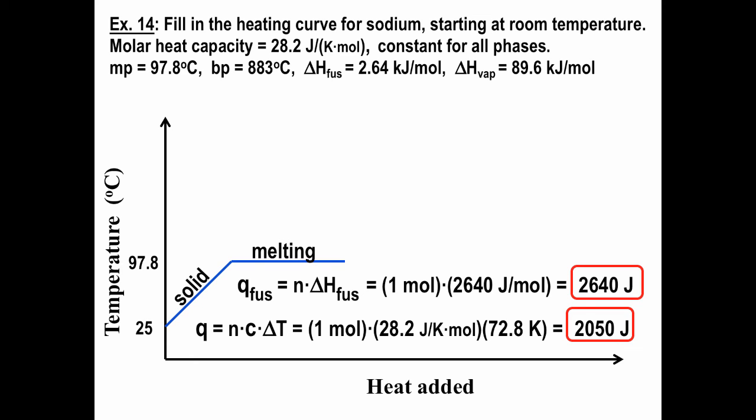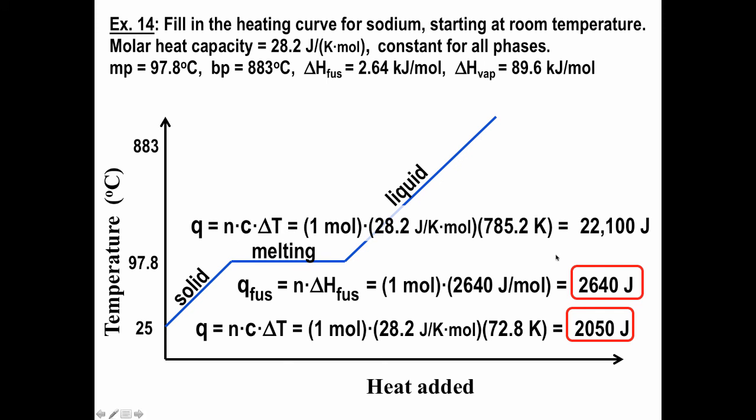Now, once all of the sodium has melted, as we keep adding heat, the temperature of the liquid sodium will increase. It'll keep increasing until we hit 883 degrees Celsius. Notice our graph is not exactly to scale here. The Q for that is the same idea as the Q for the solid, but a much bigger temperature change. In many substances, the specific heat will be different for the liquid phase than for the solid, but here we're given that it's the same for both. So that works out to be 22,000 and something joules.